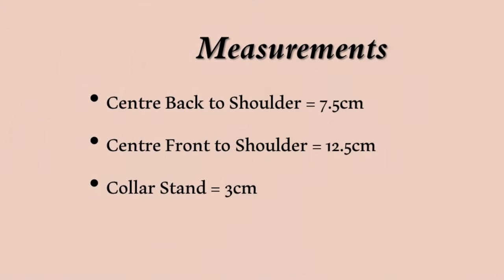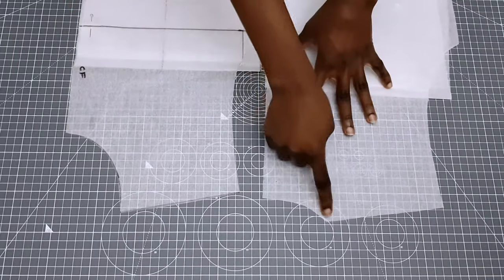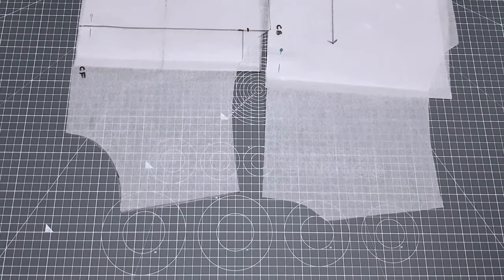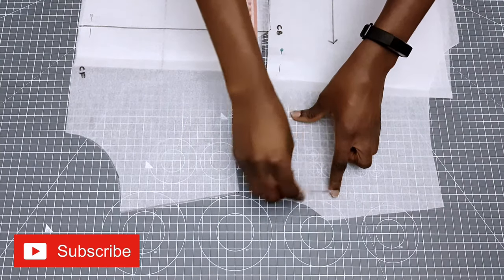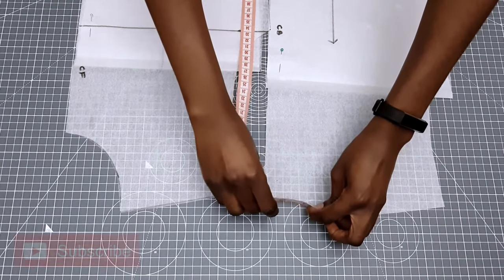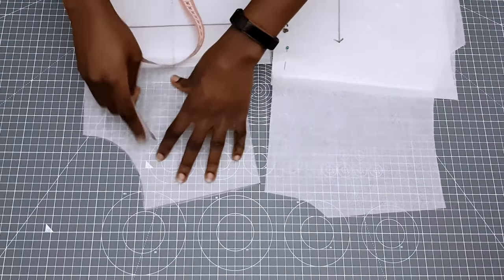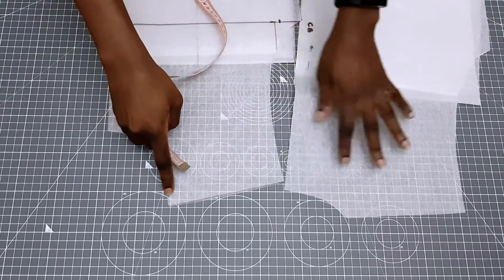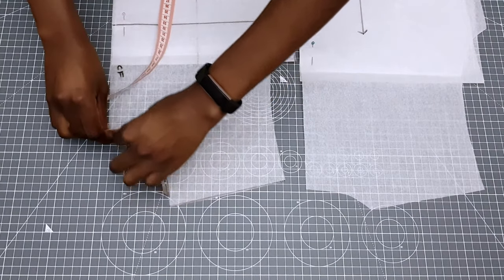So these are the measurements I'm going to be using. To begin I'm going to take the measurements from my front and back basic bodice patterns. I'll be measuring from the shoulder to centre back and shoulder to centre front. Also because my patterns were drafted with half an inch sewing allowance I will minus that from the measurements. If yours doesn't then that's fine.